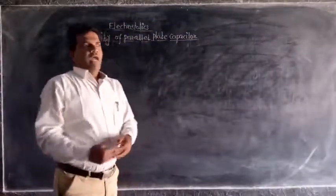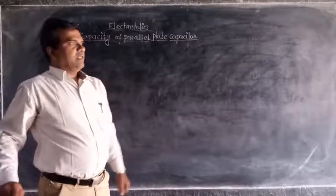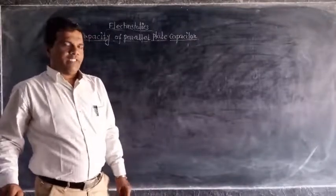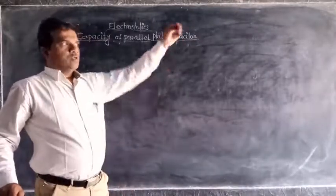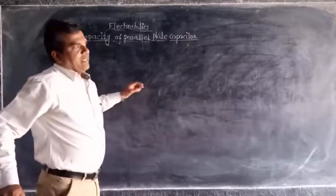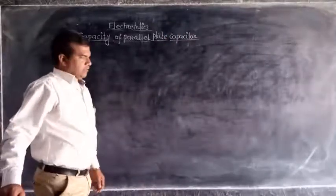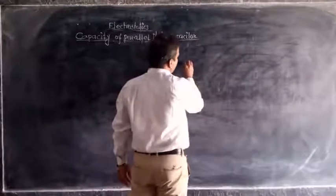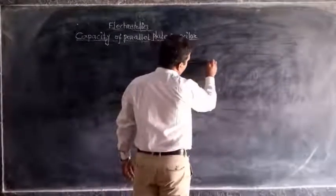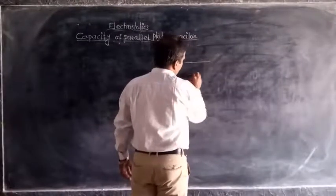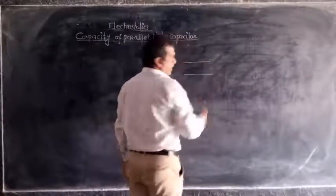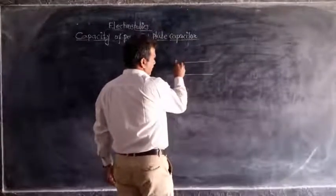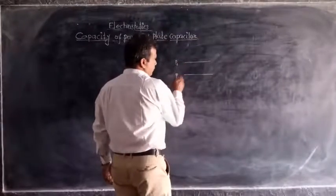Today, we have to see the capacity of parallel plate capacitor. To determine the capacity of parallel plate capacitor, we consider the parallel plate capacitor. This parallel plate capacitor consists of two parallel plates. Suppose this is plate P1 and this is plate P2.